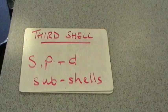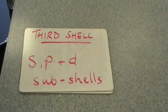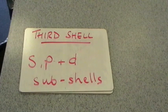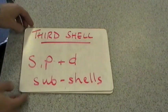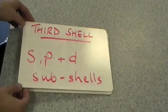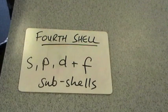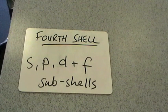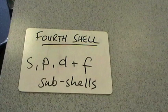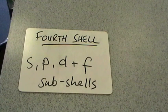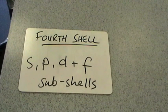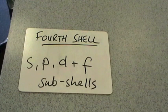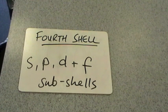The third shell is made up from 3 sub-shells. We have S again, P again, and now we have the D sub-shell. And the fourth shell has an extra one again, so that's got the S sub-shell, a P sub-shell, a D sub-shell, and now an F sub-shell. So what we're going to do now is look at what these sub-shells actually look like.